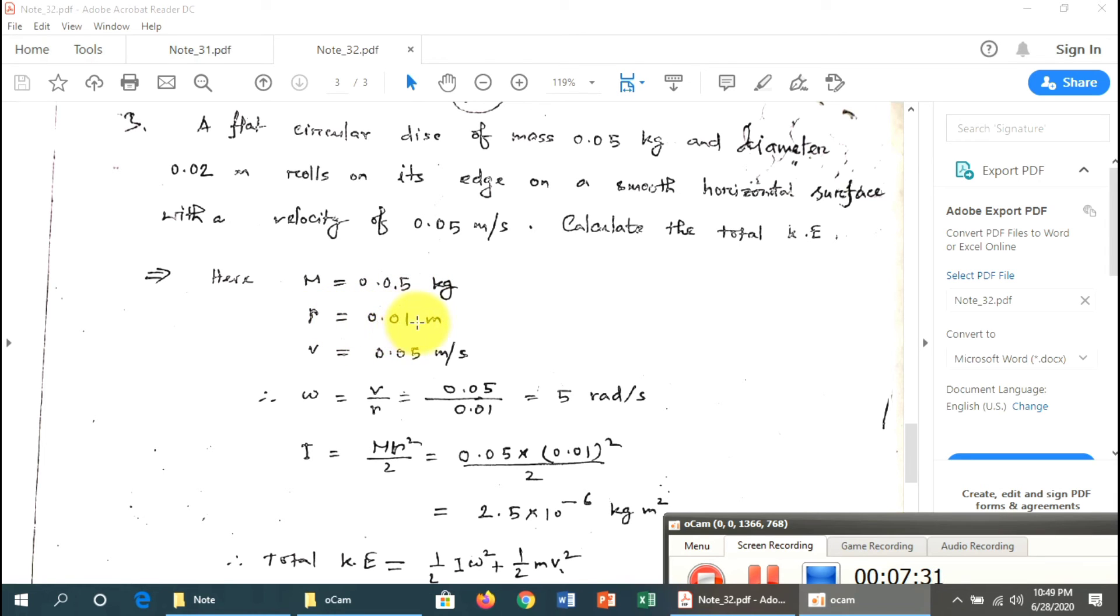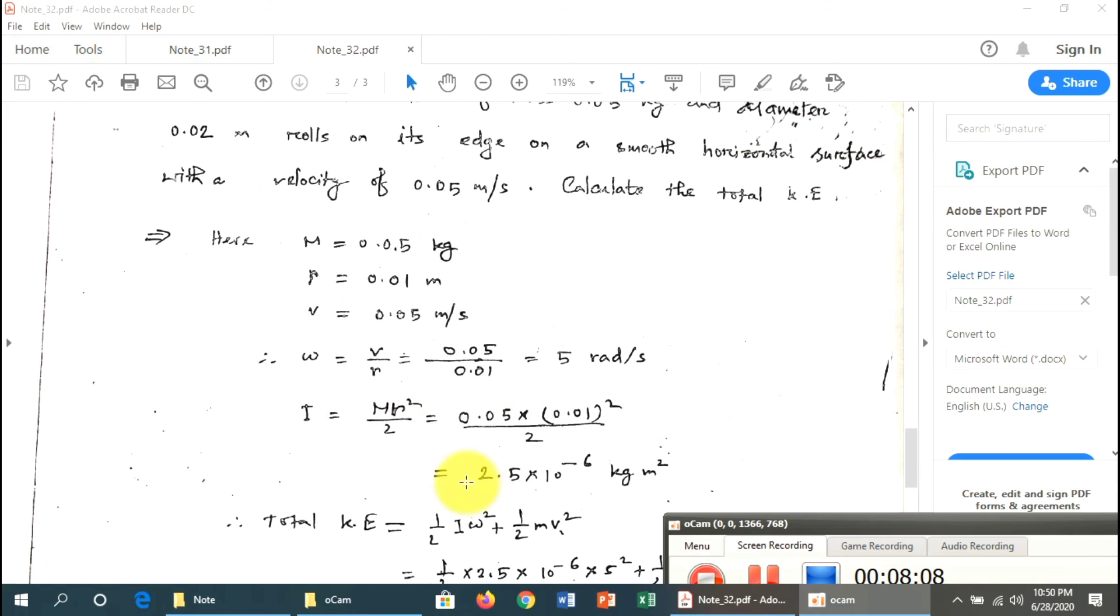Given: m = 0.05 kg, diameter = 0.02 m, so radius R = 0.01 m. Velocity v = 0.05 m/s. Angular velocity ω = v/R = 5 radians per second. The moment of inertia I = mR²/2.